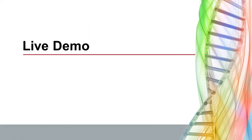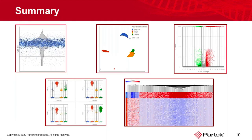In summary, I've taken you through how to work with single-cell QA/QC plots, UMAP and PCA, volcano plots, dot plots, violin plots, and heat maps.